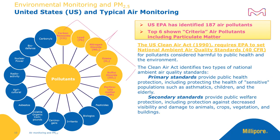The EPA has identified 187 air pollutants as well as six criteria air pollutants, which include particulate matter. These pollutants are governed by two Clean Air Act standards. Primary standards address public health protection, including protecting the health of sensitive populations such as asthmatics, children, and the elderly. Secondary standards provide public welfare and environmental protections, including protection for animals, crops, vegetation, and buildings.